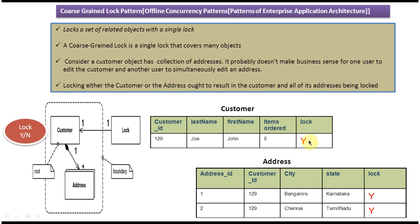This lock column is very simple but important and must be managed properly in order to set and clear the lock. Once user A finishes changing the customer and address information, the lock should be changed back to N so that another user can come and take that customer and address information and make changes. We have to maintain this lock column properly. That is the coarse-grained lock pattern — thanks for watching.